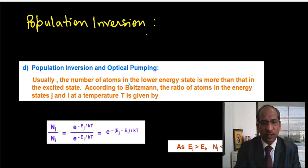So the topic, as I told you, is population inversion. Usually the number of atoms in the lower energy state is more than that in the excited state. According to Boltzmann, the ratio of atoms in the energy state J and I at temperature T is given by this way, which you have also seen in Einstein's coefficient. So let me explain this concept.